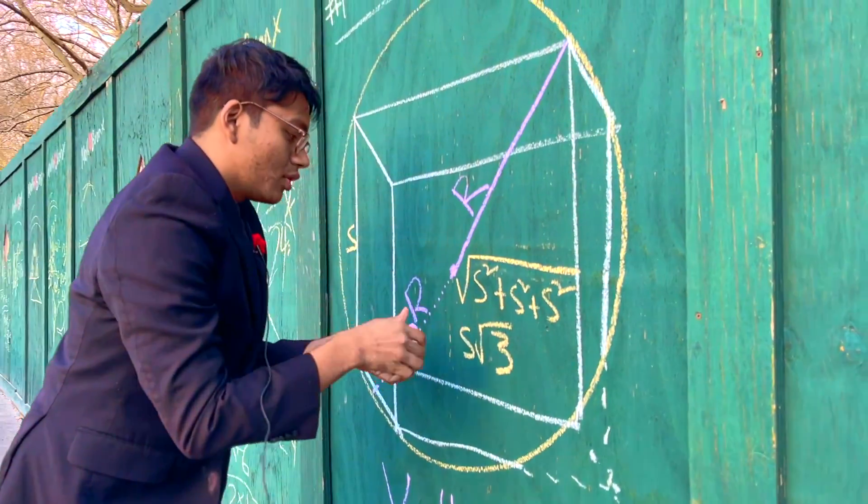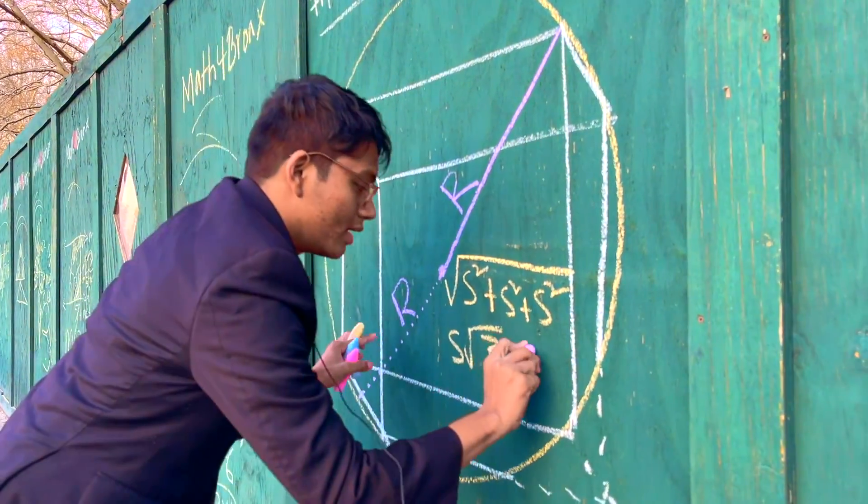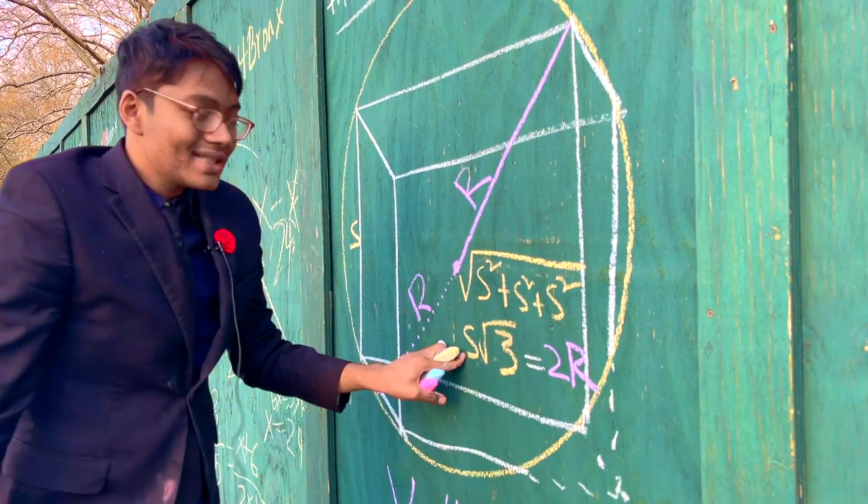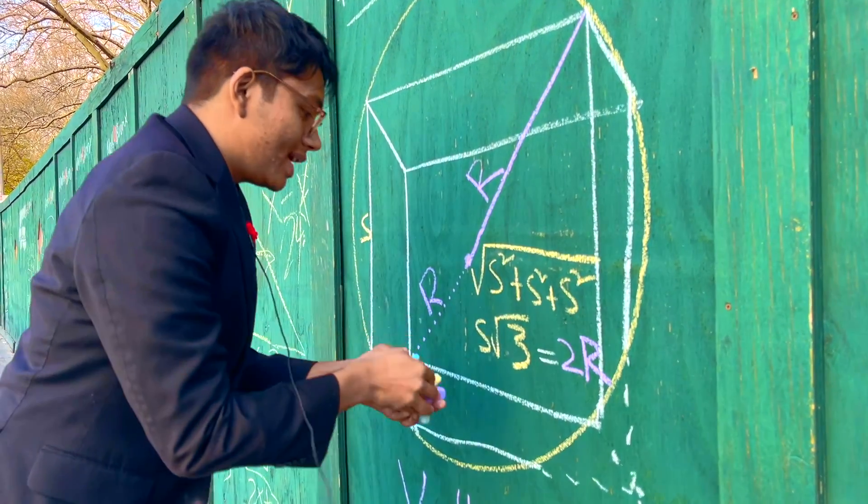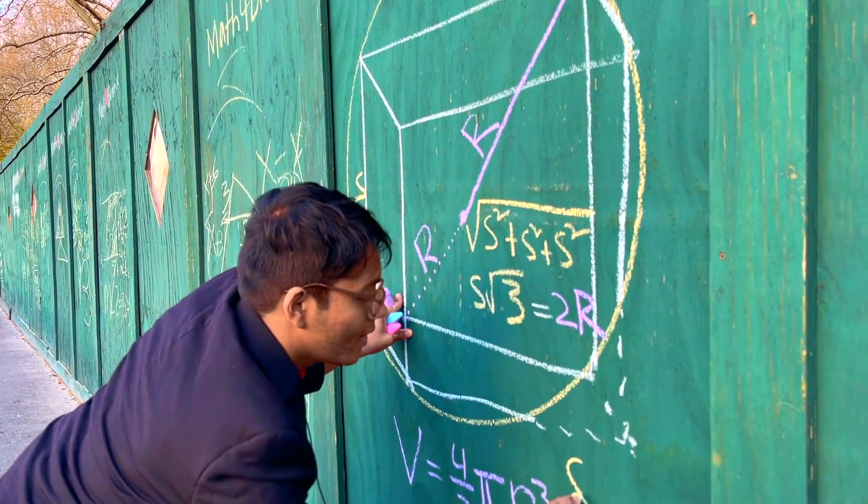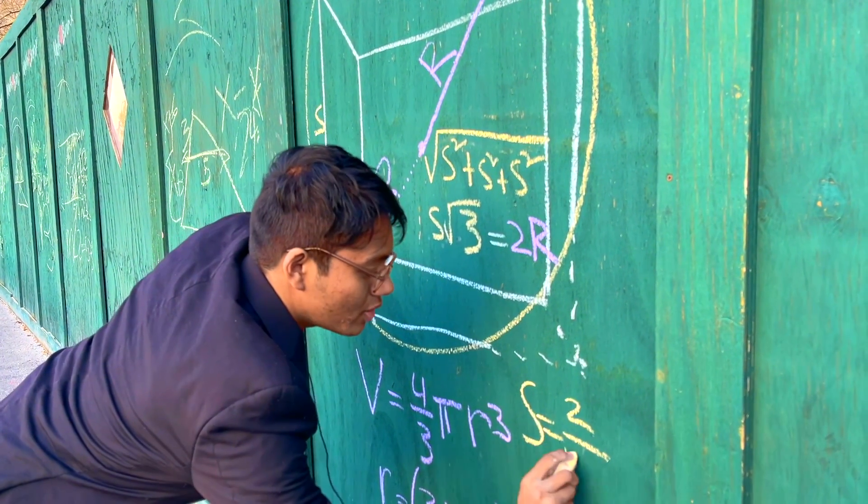So this has to equal 2 times r. And now you can simply solve for s and you're home free. s is simply going to be 2 over square root of 3 times r.